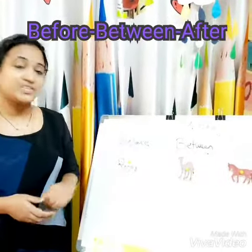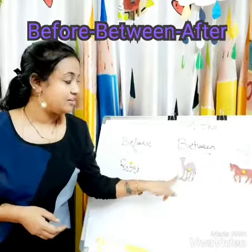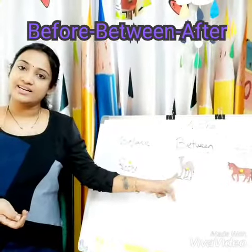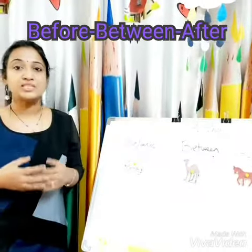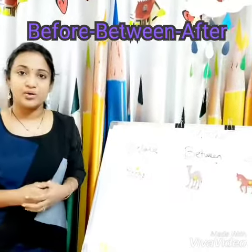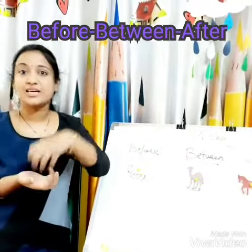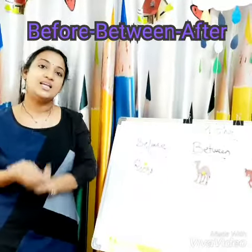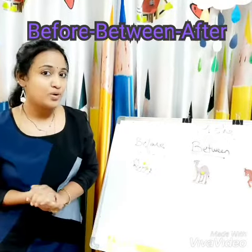And what is after camel? Horse is after camel. Understood children: before means what is in first position. And between means in the middle, in the middle position. And after means in the third or last position. I hope you understood. Good!